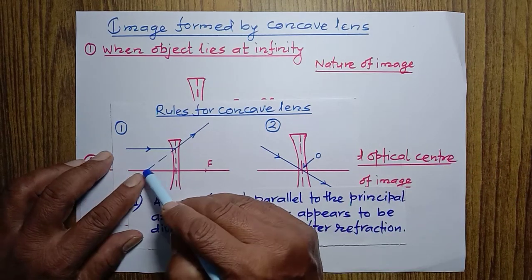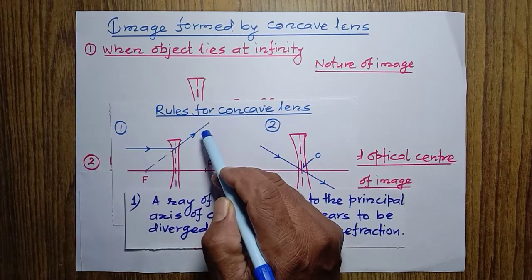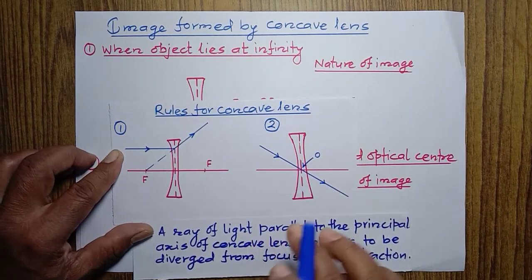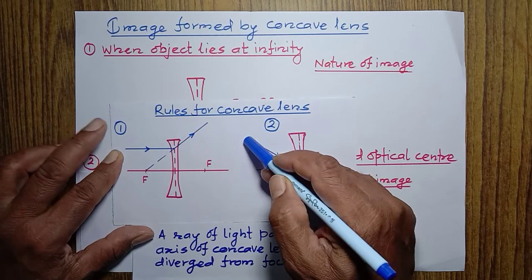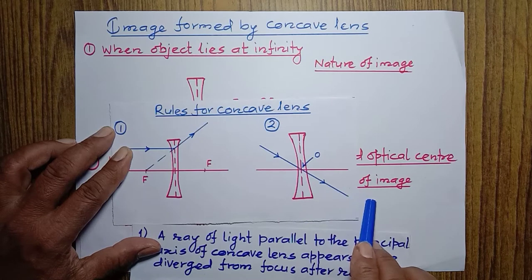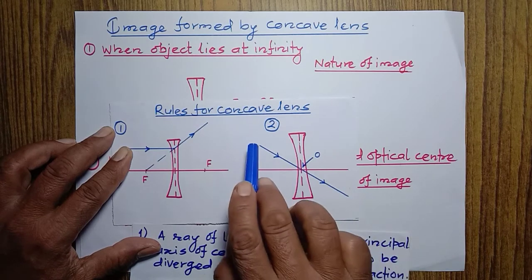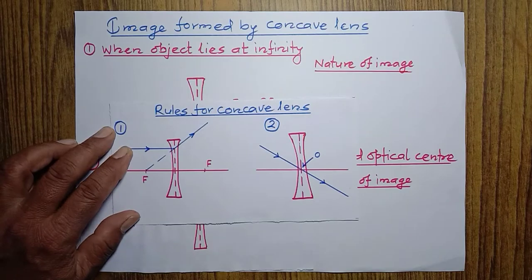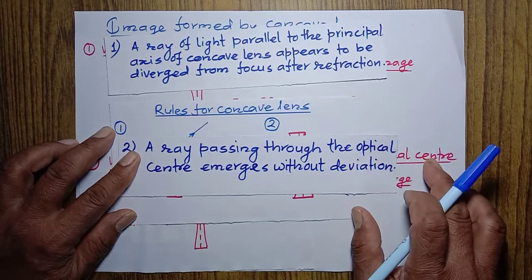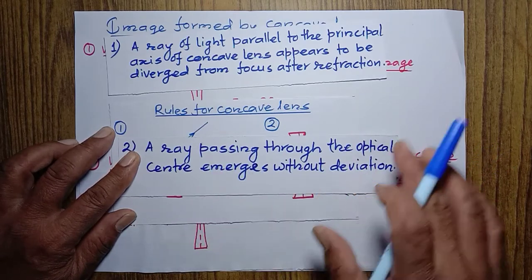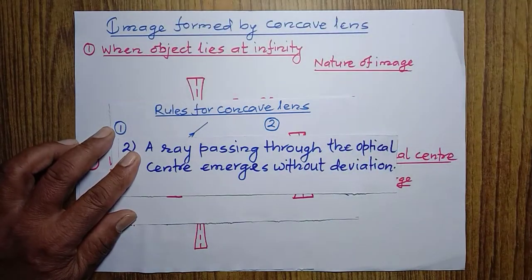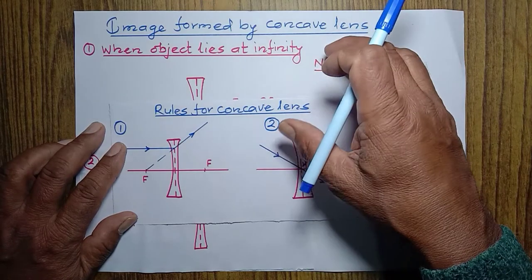Look at this — it is appearing to come from focus. And there is another rule also. If a ray of light passes through the optical center of the concave lens, it passes straight without deviation. For the second rule: a ray passing through the optical center emerges without deviation. We have to remember these two rules to draw rays of light through a concave lens.